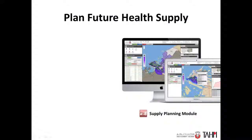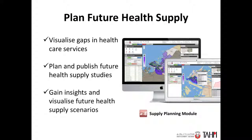The Hard Supply Planning Module is a web-based tool for planning future health care service systems. It allows users to import and visualise gaps in the current and future health care system of Abu Dhabi, and plan new facilities and redevelopments to address health service gaps in geographical regions.